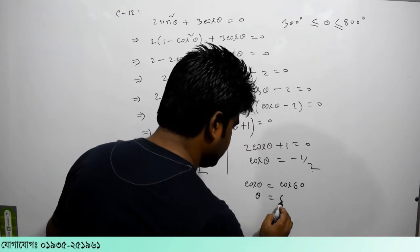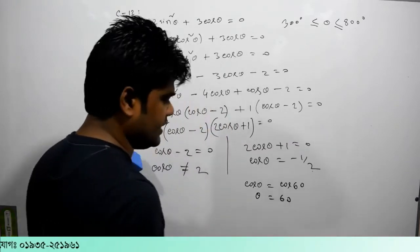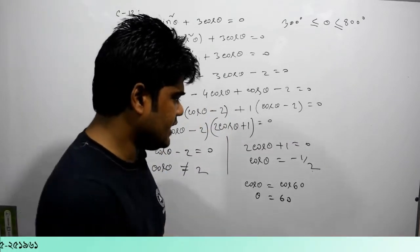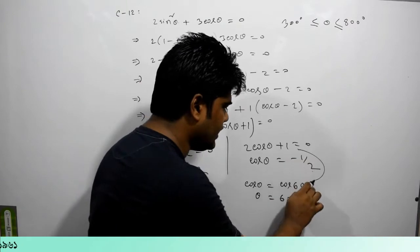Cos — meaning theta will come out as 60 degrees, but what is this theta exactly?